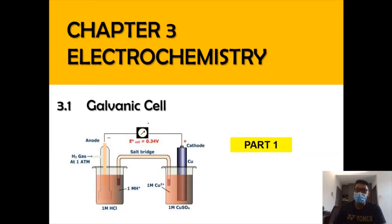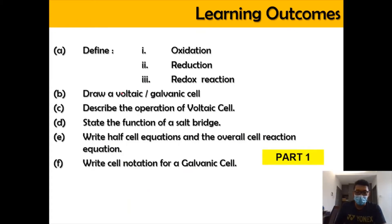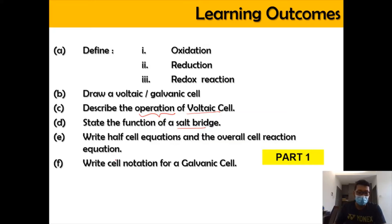In 3.1, we're going to divide that into 2 parts. But in this video, we're going to focus on part 1 first. So in this video, we're going to look into the definition of oxidation, reduction, and redox reaction. We're also going to learn how to draw a voltaic or galvanic cell, as well as describe its operation, state the function of the salt bridge, write the half cell and overall cell reaction equations, and write the cell notation for the galvanic cell.